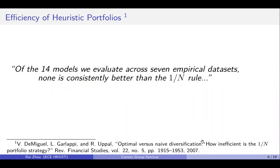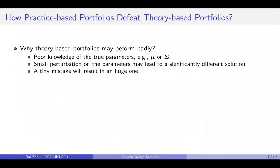For example, by a survey in 2007, they find that of the 14 models they evaluate across seven empirical datasets, none is consistently better than the 1/N portfolio. So why is that? How can the practice-based portfolios defeat the theory-based portfolios?